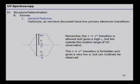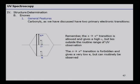Carbonyls and enones have more contributions to consider. Carbonyls have two primary electronic transitions: pi to pi* and n to pi*. The n to pi* transition is forbidden and gives a very low molar absorptivity, and cannot be routinely observed. The pi to pi* transition is allowed and gives a high molar absorptivity intensity, but it lies outside the routine range of UV observation. One must keep in mind these various considerations when analyzing carbonyl systems.